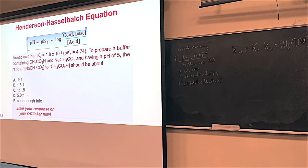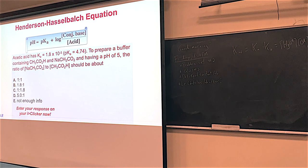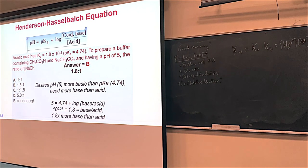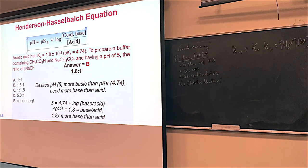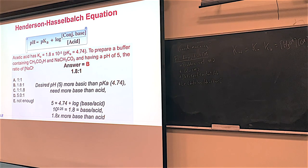The answer is either B or D — it won't be C, because C has too much acid relative, which would create a pH less than 4.74. Since 5 to 4.74 isn't a huge difference, I'd guess B. If you throw it into your calculator: pH 5 = pKa 4.74 + log(base/acid). So 5 minus 4.74 is 0.26; to get rid of the log, 10 to the 0.26 gives the 1.8 number — you need 1.8 moles of base relative to 1 mole of acid.